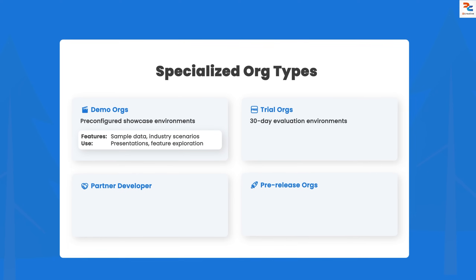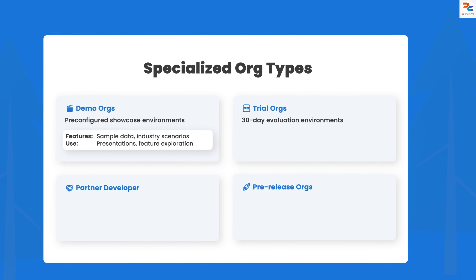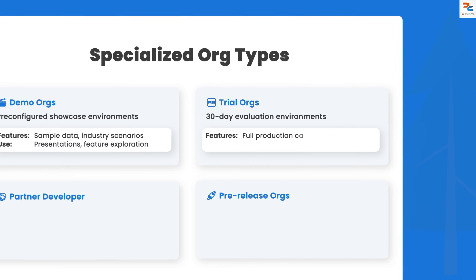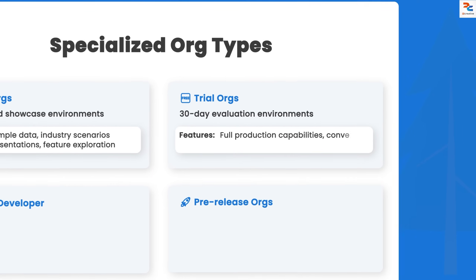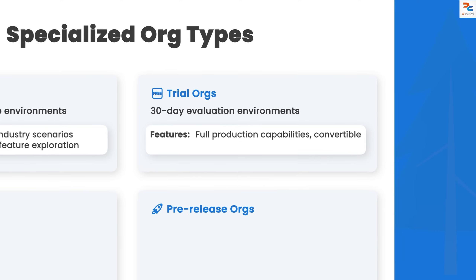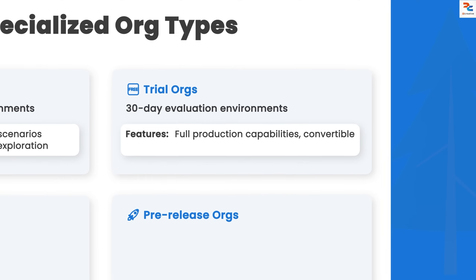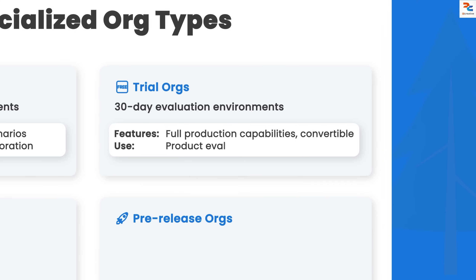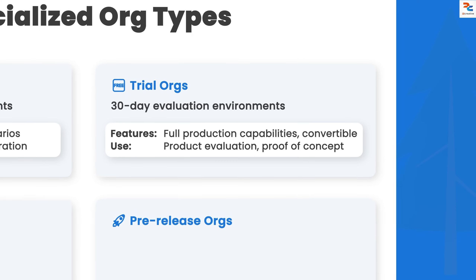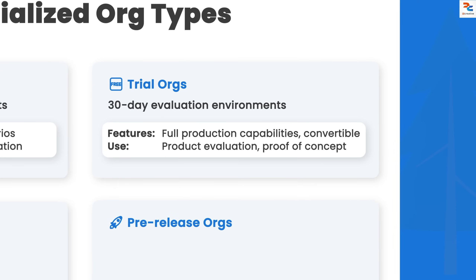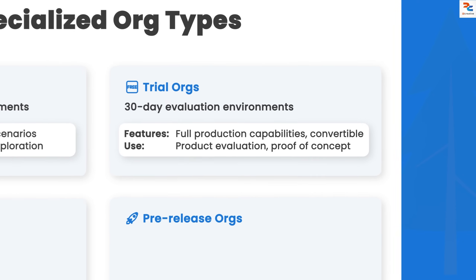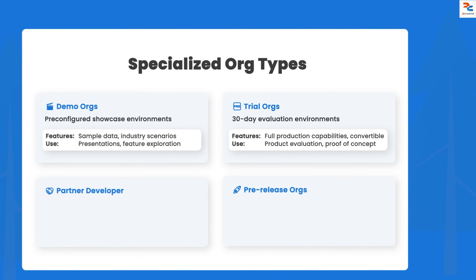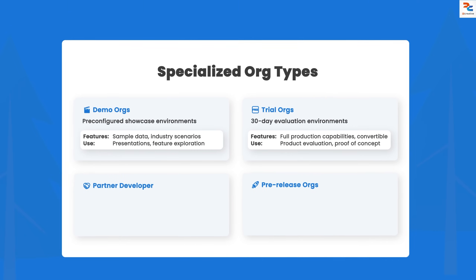Trial orgs are 30-day production-level environments for evaluation, with full feature access and the ability to convert to a paid subscription — perfect for testing before buying. You get complete production capabilities with no limitations, so you can test with real data volumes, import your actual data, set up integrations, and run pilot programs with real users.